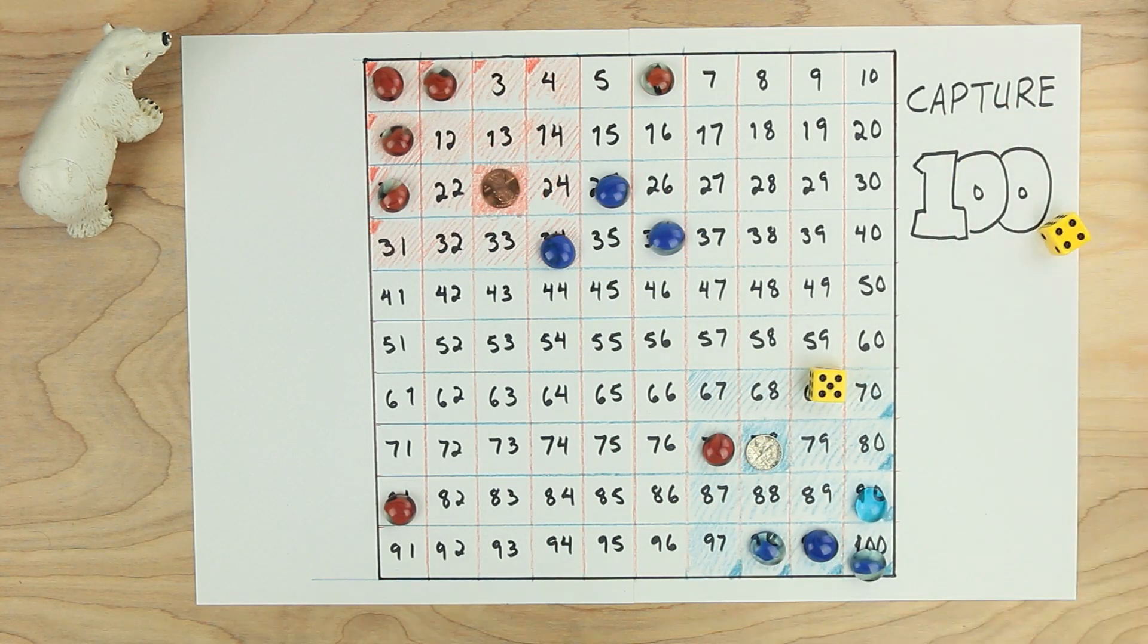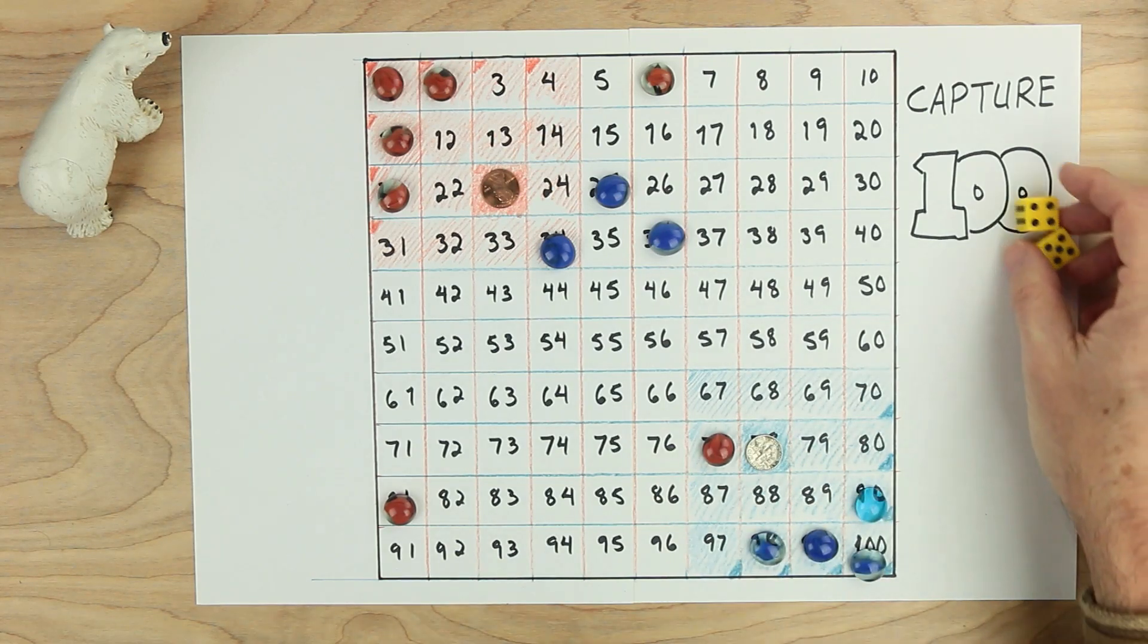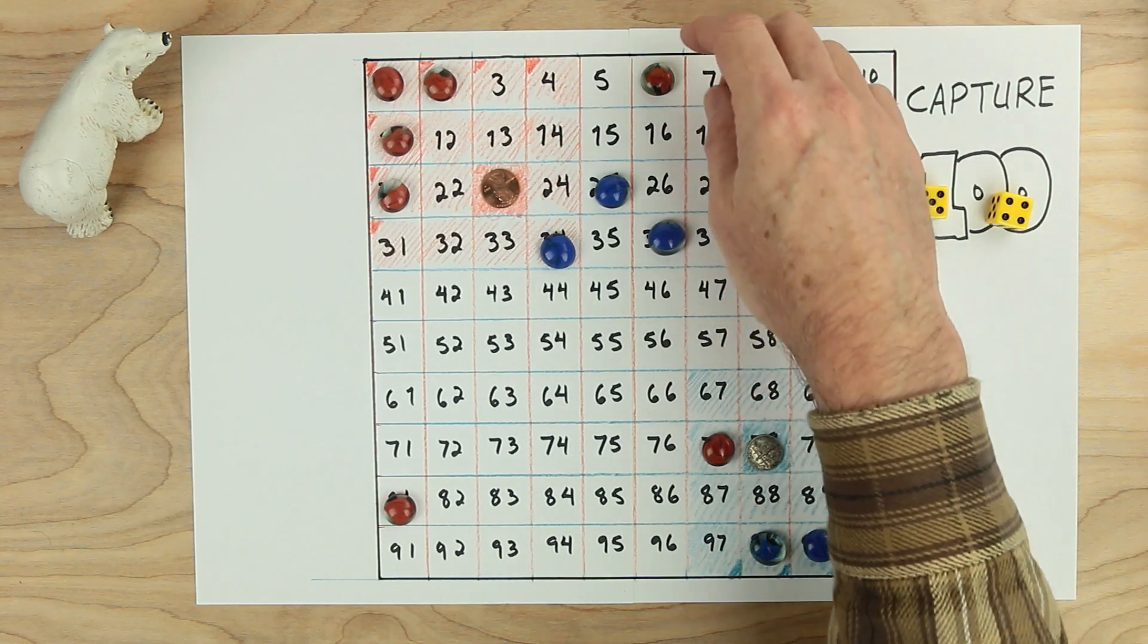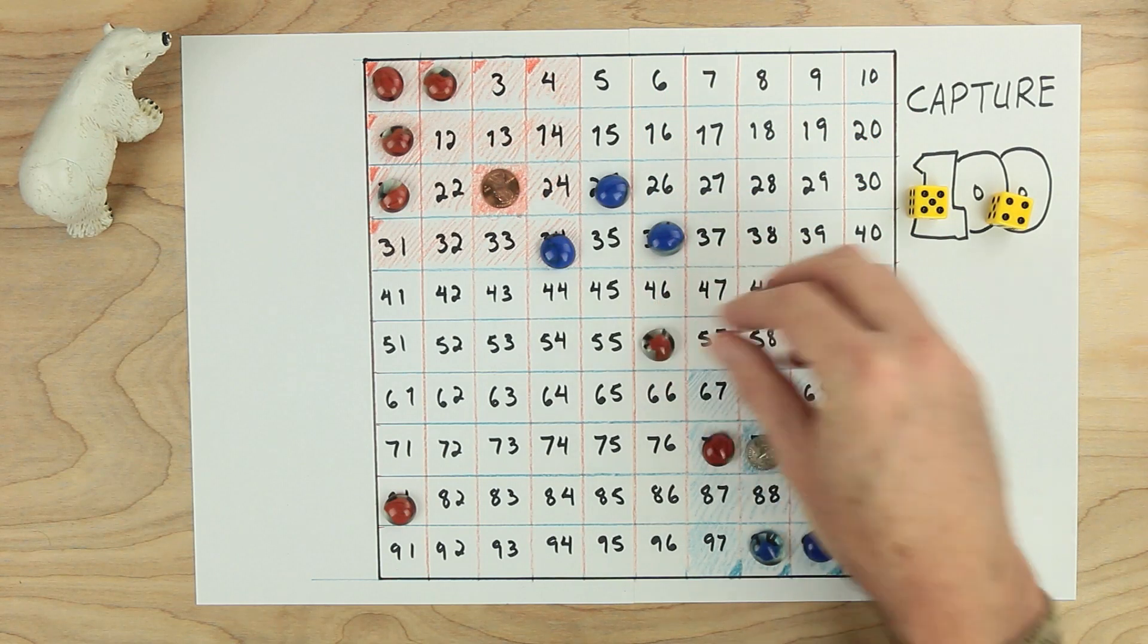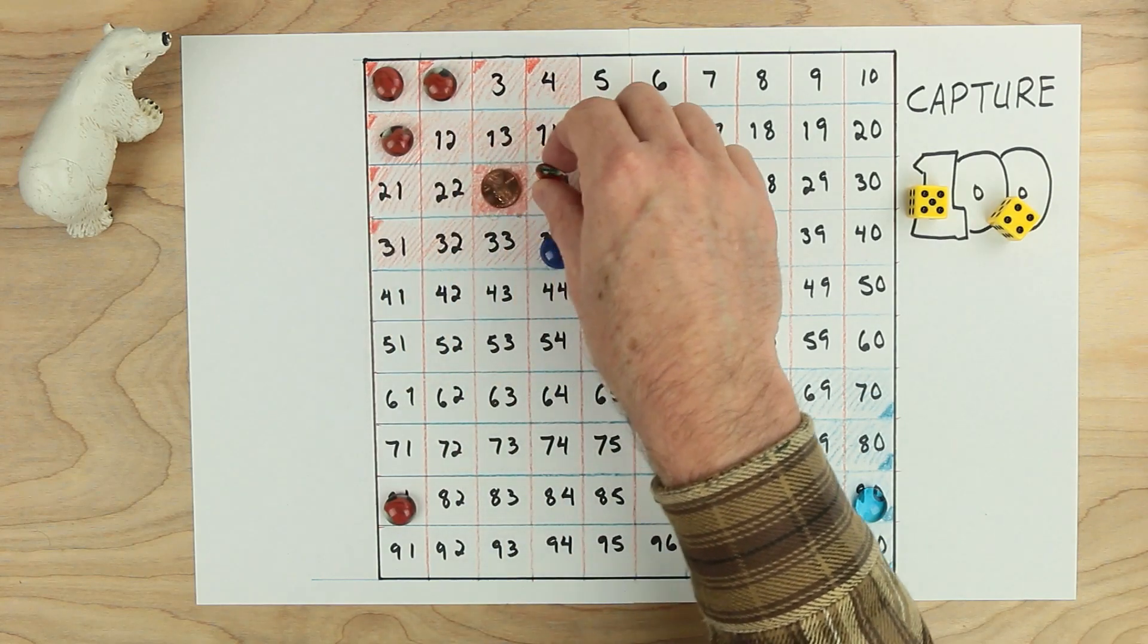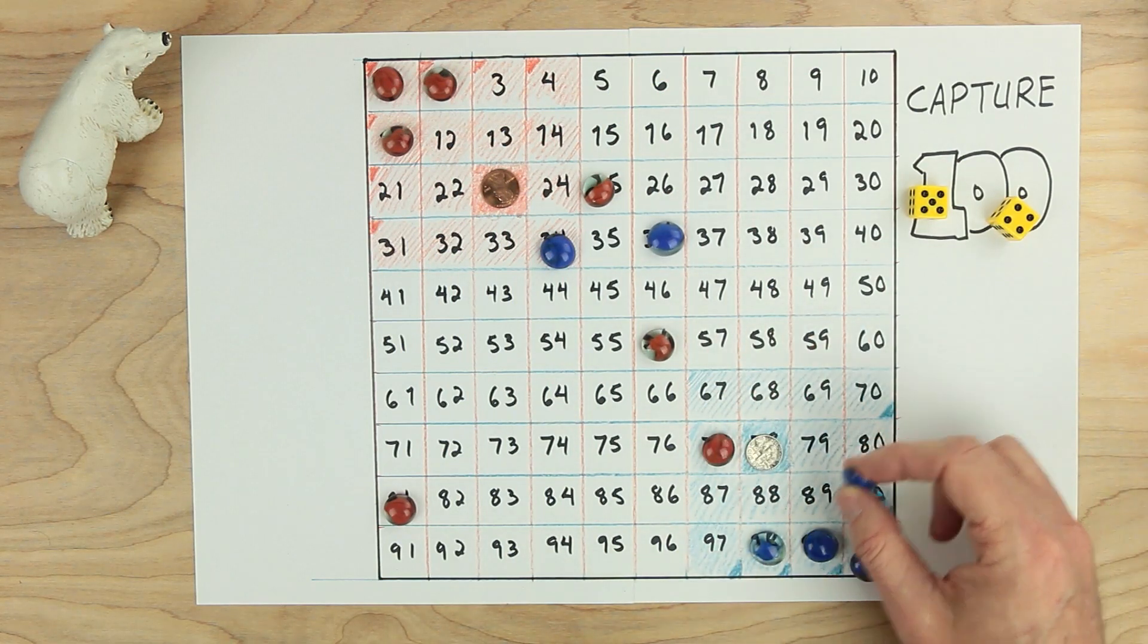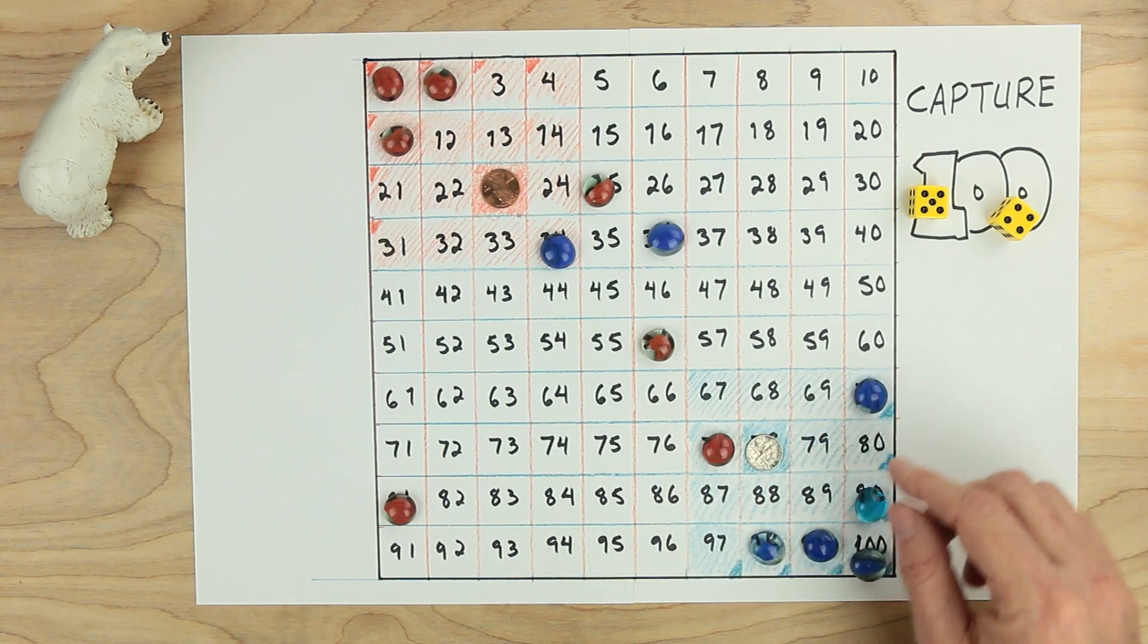Red's turn. Red rolls a four and a five. Now there's a very special thing that can happen with a four and a five. So red's going to start by adding five tens to this one. So one, two, three, four, five. But the four matters a whole lot here. Four ones with this piece, one, two, three, four, sends this blue piece back home. And red can choose where to put it. And red does not want to put it here on the eighty or the ninety-seven. You can see why. So red decides to put it on the seventy. That's a better move.